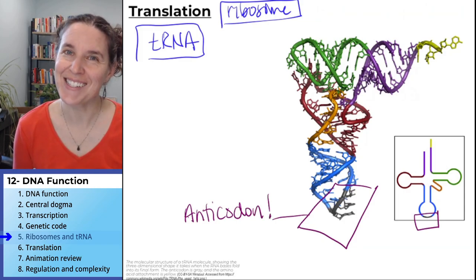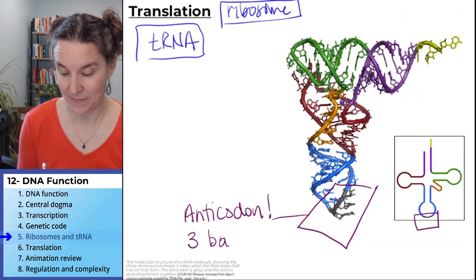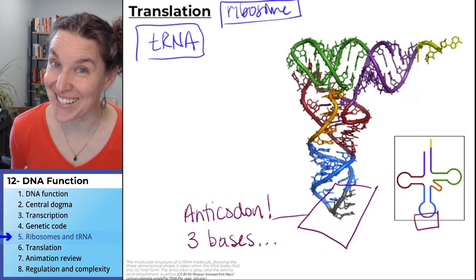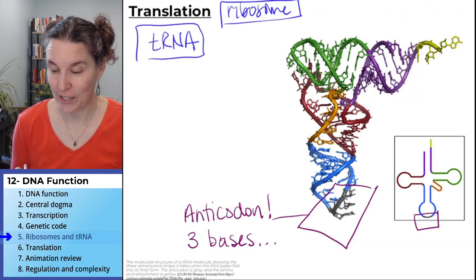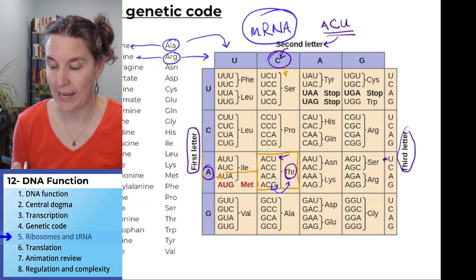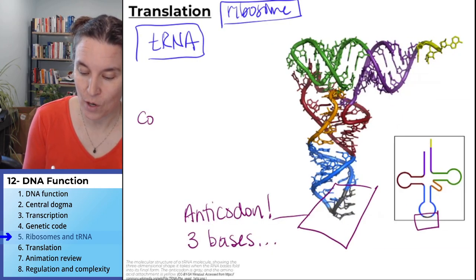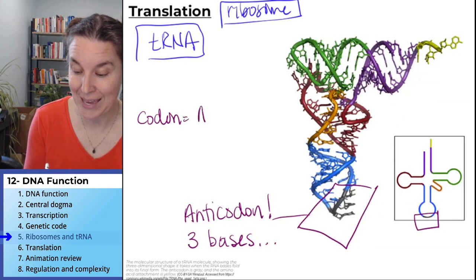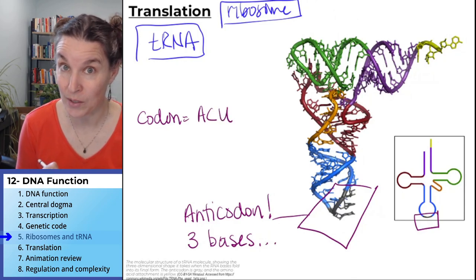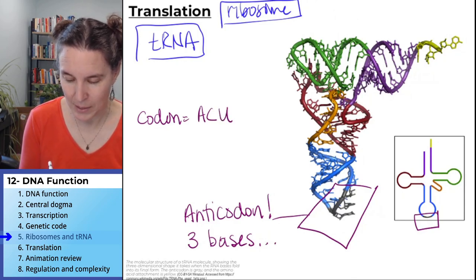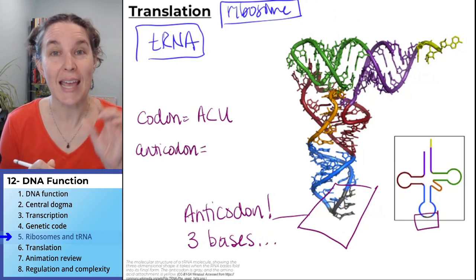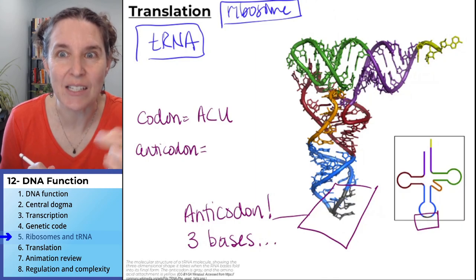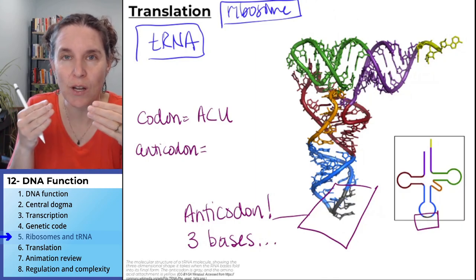It's three bases, and it matches the codon. Let's use the mRNA codon ACU. So if the codon is ACU, tell me what the anti-codon is going to be. The anti-codon is going to bind to the codon — it's going to match the codon.